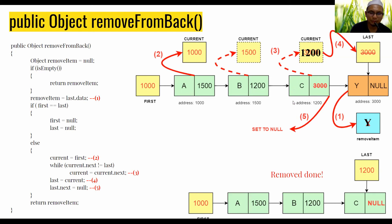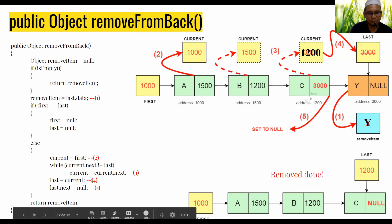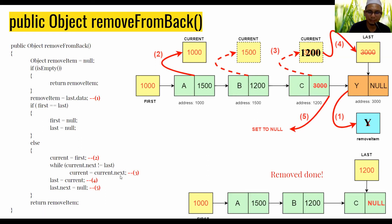After removing the last node, the second last node will become the new last. So we need to find the address of the second last node. We use a loop to traverse and find the second last node.